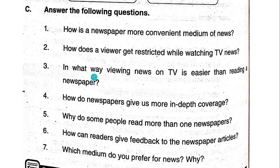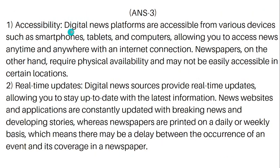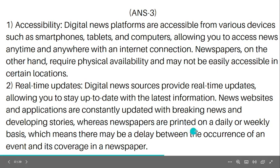In what way is viewing news on TV easier than reading a newspaper? Accessibility: Digital news platforms are accessible from various devices such as smartphones, tablets, and computers, allowing you to access news anytime and anywhere with an internet connection. Newspapers, on the other hand, require physical availability and may not be easily accessible in certain locations. Real-time updates: Digital news sources provide real-time updates, while newspapers are printed on a daily or weekly basis, which means there may be a delay between an event occurring and its coverage in a newspaper.